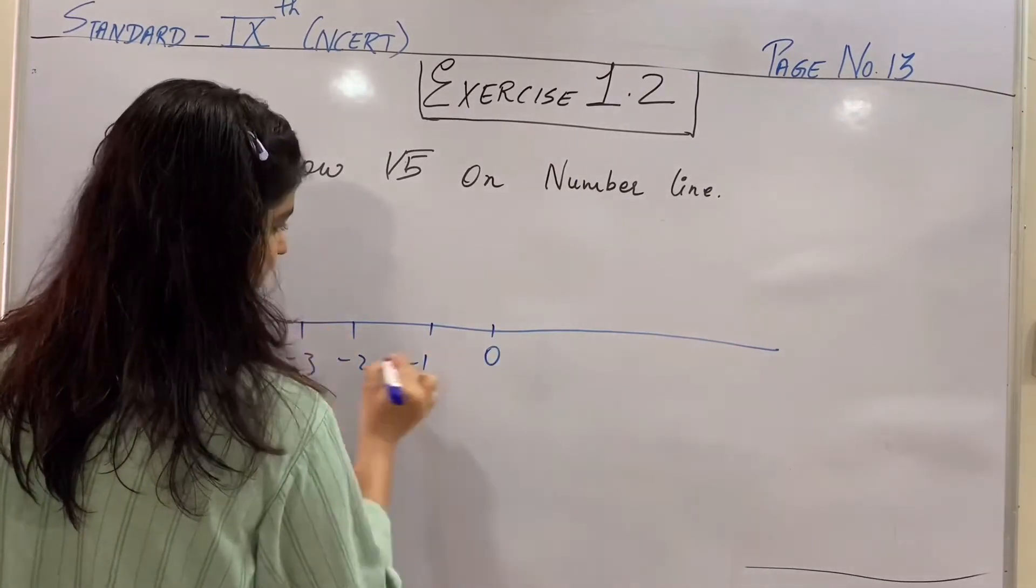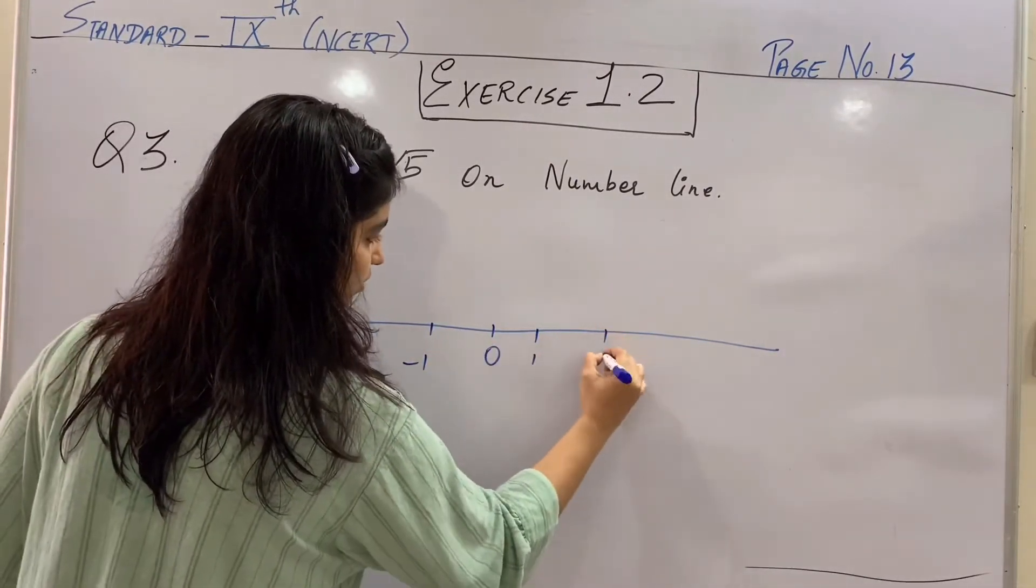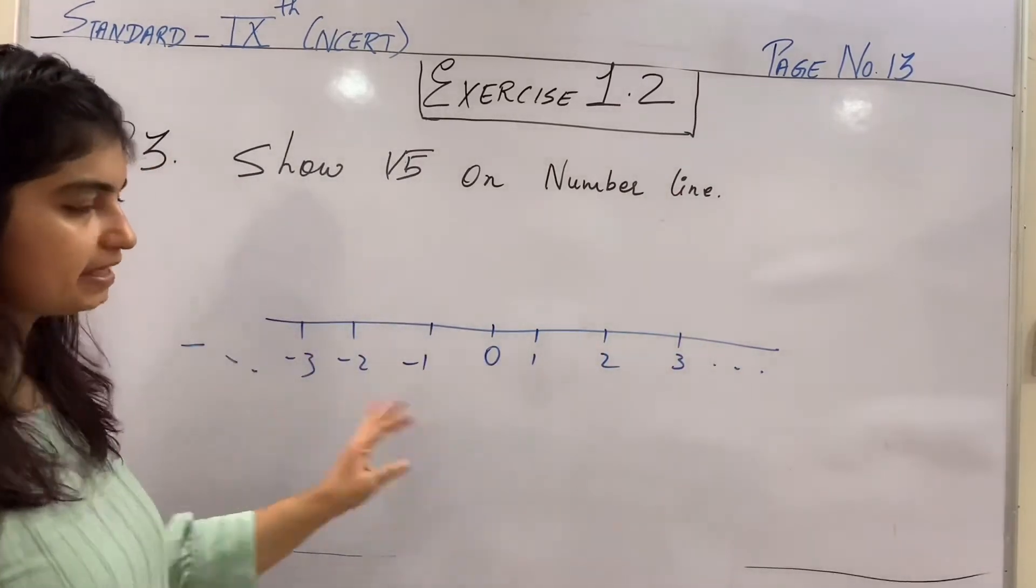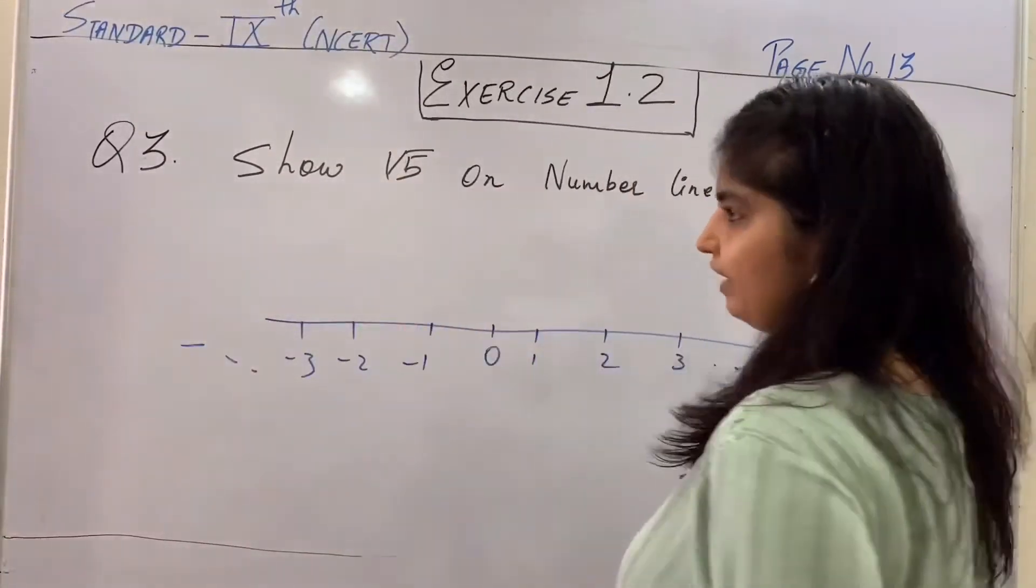This side was divided of 1, 2, 3 and so on. This being the number line. You are asked to plot root 5.